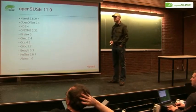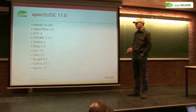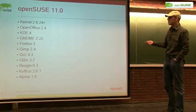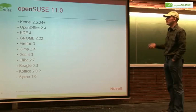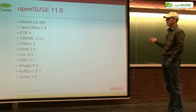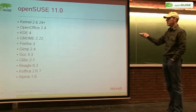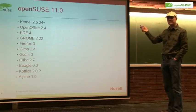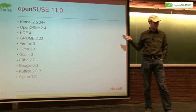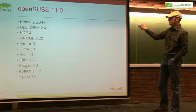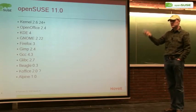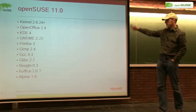These are the new versions from open source projects that will be in openSUSE 11.0: kernel 2.6.24, OpenOffice 2.4 is in beta right now, KDE 4 is also in beta, GNOME 2.22 is beta 2 or 3, Firefox 3 is going to beta, GIMP 2.4 is already in, GCC 4.3 is release candidate, and so on.